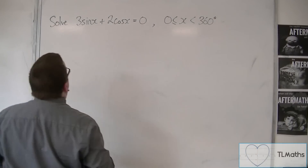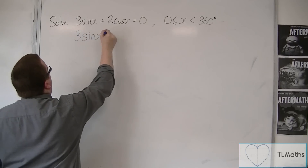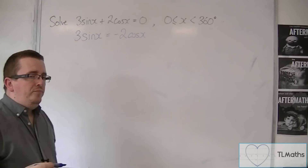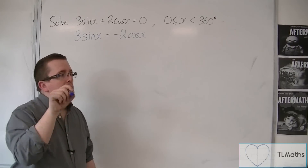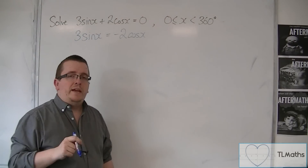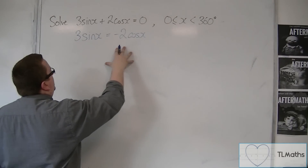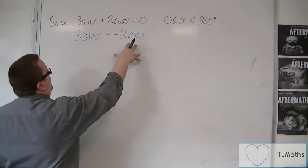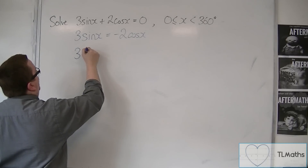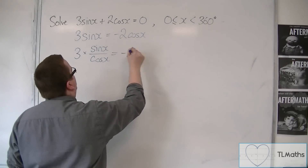So what we're going to do is take 2cos(x) from both sides to start this off. So 3sin(x) is equal to minus 2cos(x). It is here where we then divide both sides by cos(x). Now why would we do that? Well, in order to get something that we can solve — if I divide both sides by cos(x), I'm going to get 3 lots of sin(x) over cos(x), which is now equal to minus 2.